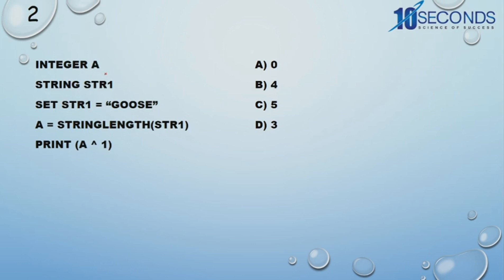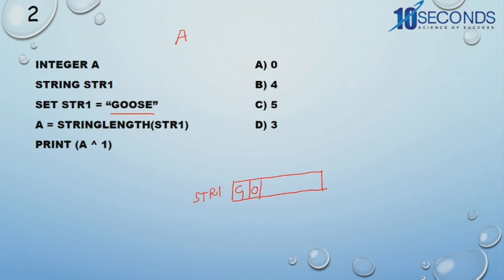Now we have the second problem. Integer A, so memory will be allocated to A. And string str1 — we are initializing str1 with a particular string constant, because a group of characters enclosed within double quotes is called a string constant. A single character enclosed within single quotes is called a character constant. So here: G, O, O, S, E — and the last will be the null character. Now A = string length of STR1. The string length is 5, so 5 will go and sit in A.